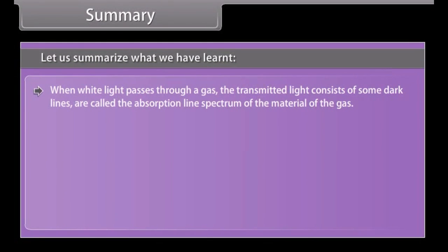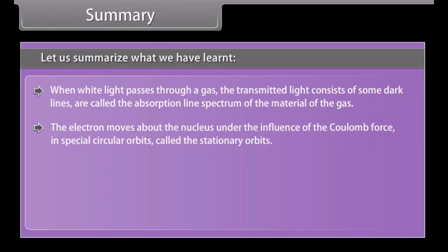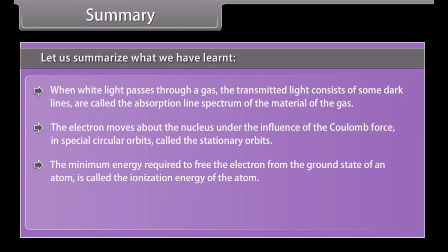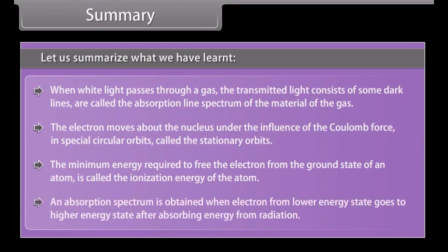When white light passes through a gas, the transmitted light consists of some dark lines called the absorption line spectrum of the material of the gas. The electron moves about the nucleus under the influence of the Coulomb force in special circular orbits called the stationary orbits. The minimum energy required to free the electron from the ground state of an atom is called the ionization energy of the atom. An absorption spectrum is obtained when electron from lower energy state goes to higher energy state after absorbing energy from radiation.